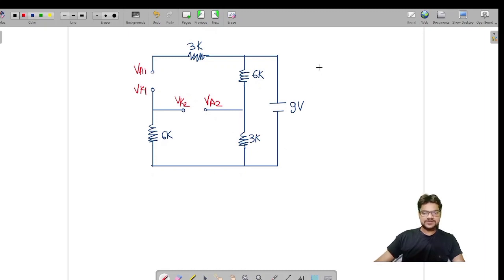Now applying voltage division rule, by voltage division rule I can find out VA2. That is 3K by 3K plus 6K into total voltage 9V. I have 3K divided by 9K into 9V. So 9 and 9 get cancelled out, this gets cancelled out, so I get VA2 equals 3V.